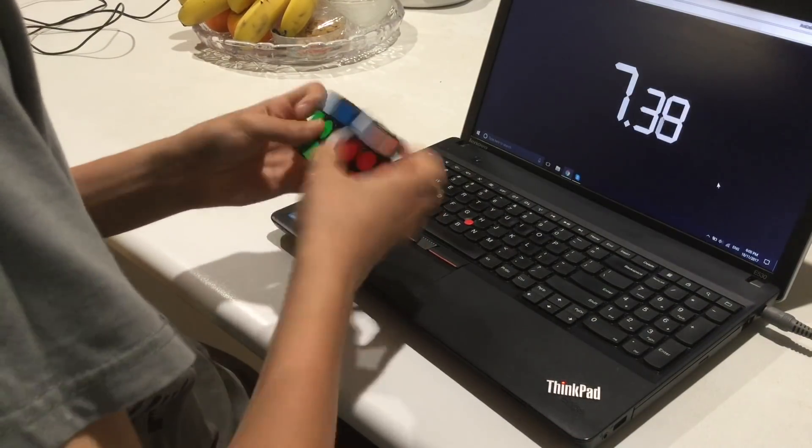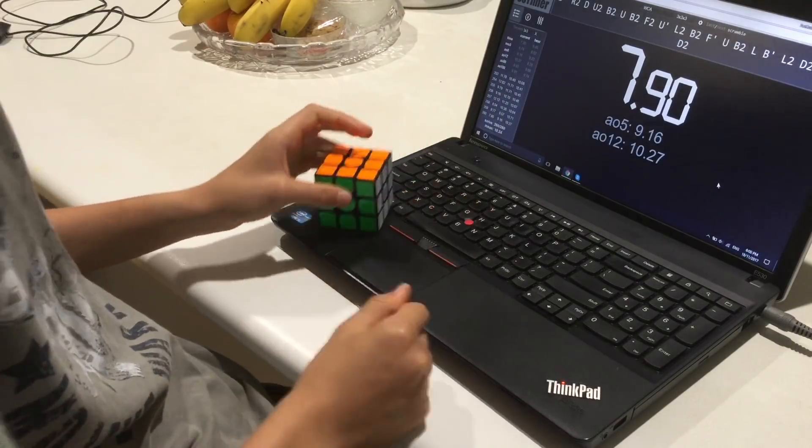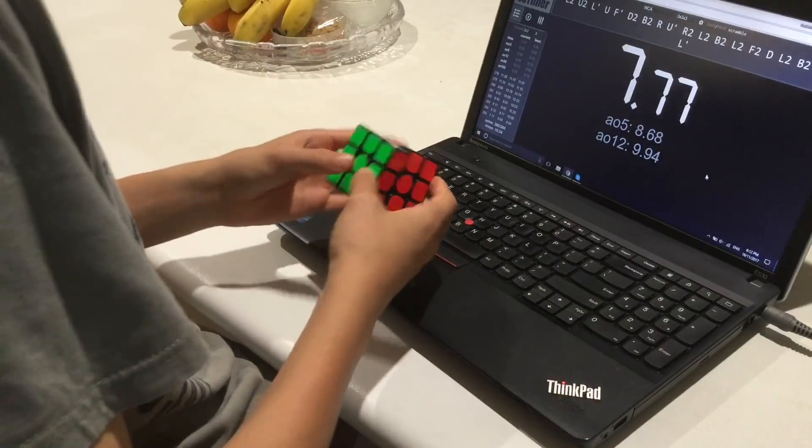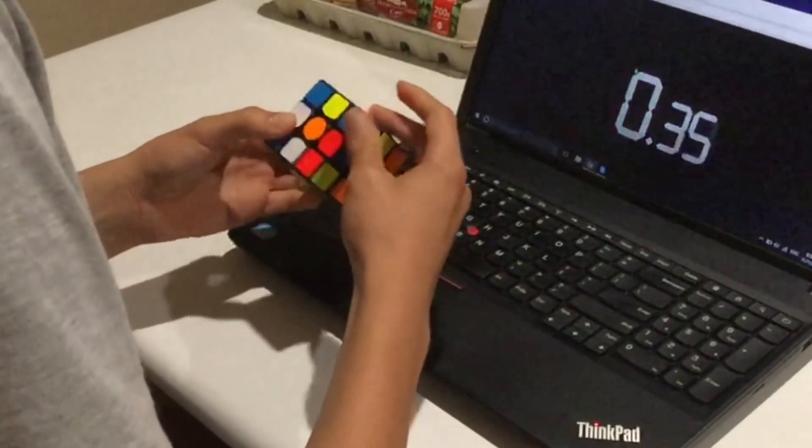Maybe this could be another experiment but I reckon that if I took the time in between solves to relax and put 100% effort into making each solve as good as possible, I reckon I could get a PB average of 50.